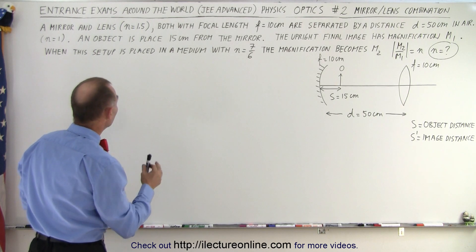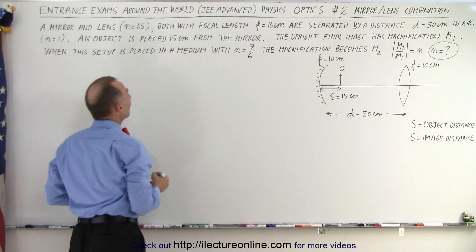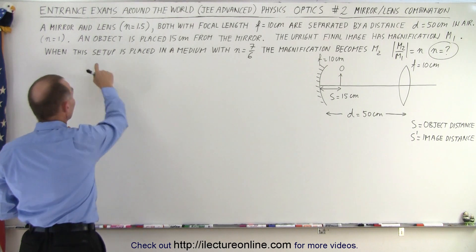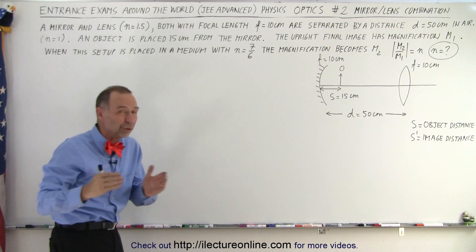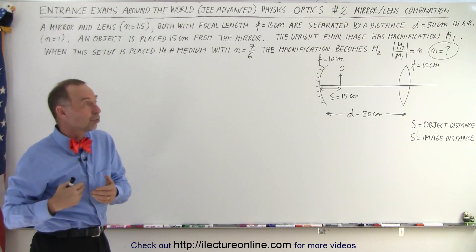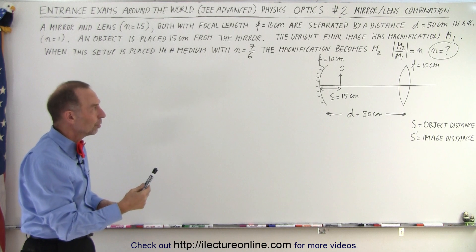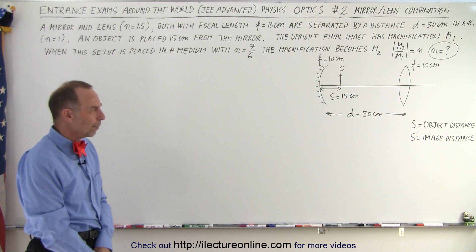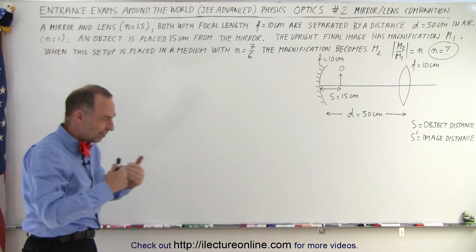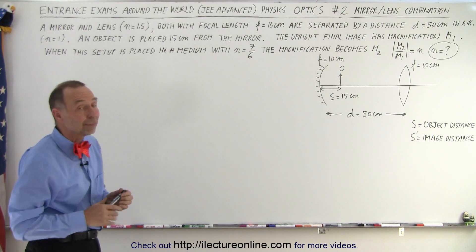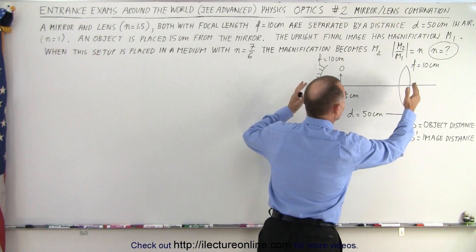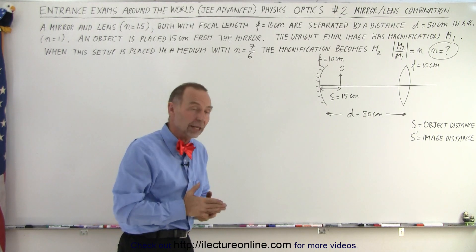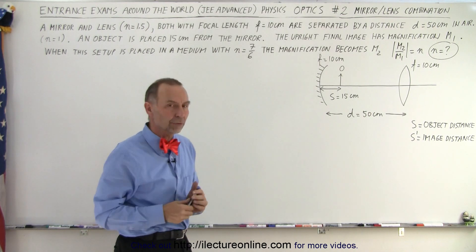The problem says: a mirror and a lens — where the lens has an index of refraction of 1.5 — both with focal length f = 10 centimeters, are separated by a distance of 50 centimeters in air. An object is placed 15 centimeters from the mirror. When this setup is placed in a medium with index of refraction 7/6, the magnification changes. We'll need to use the lens maker's equation to find the new focal length, so let's start.